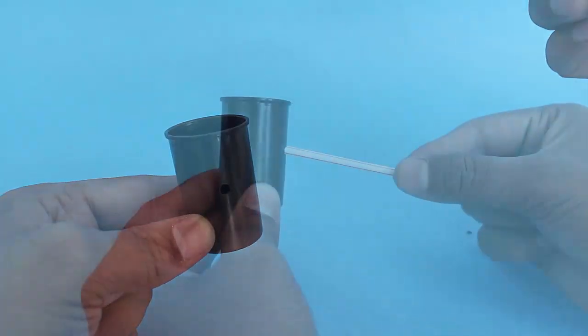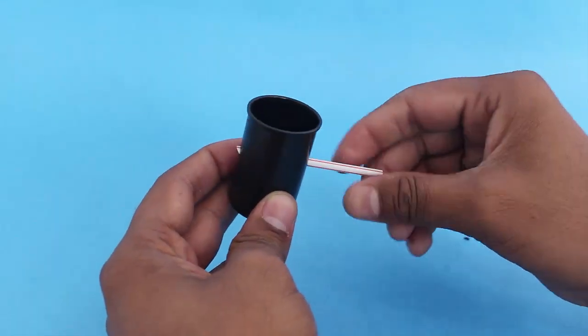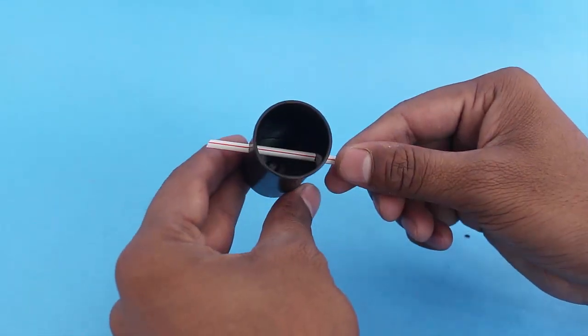a film reel can, neodymium magnets, 35 gauge insulated copper wire, LED, spokes, etc.